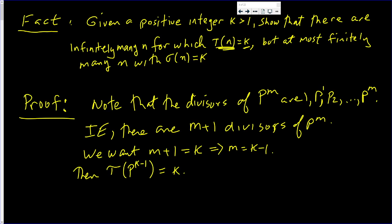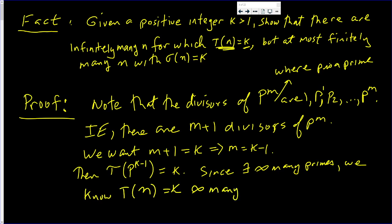And just want to say something. Note that the divisors of p to the m where p is a prime. Since there exist infinitely many primes, we know that tau of n equals k infinitely many times.